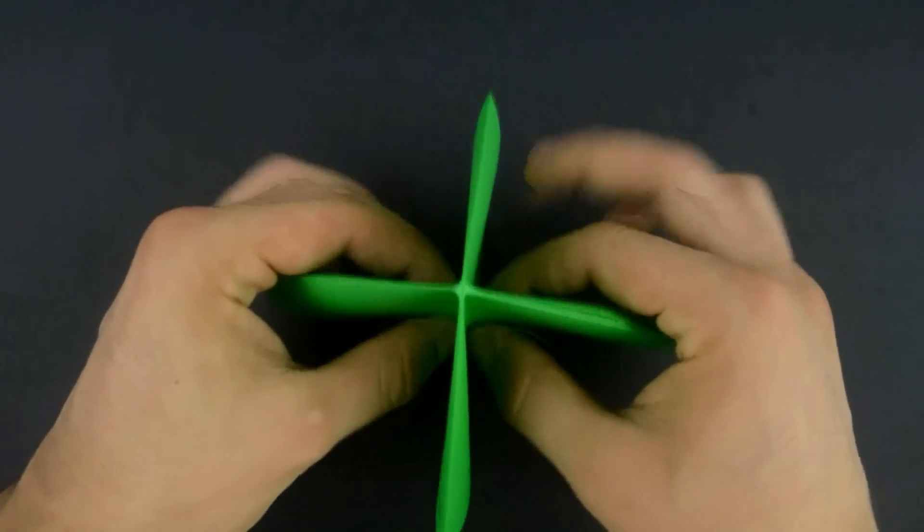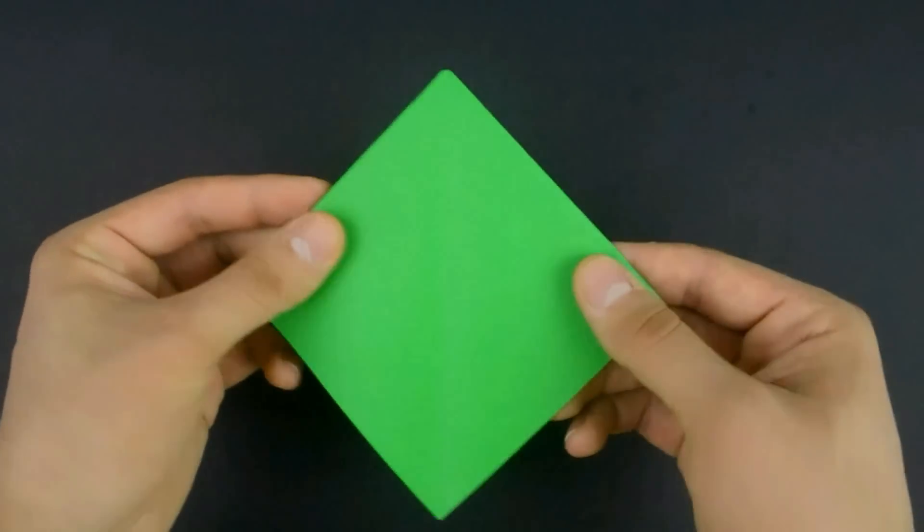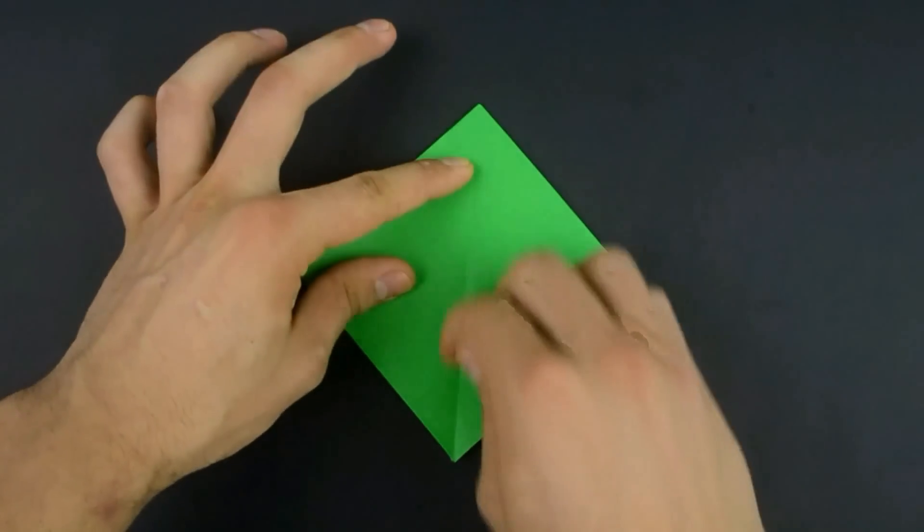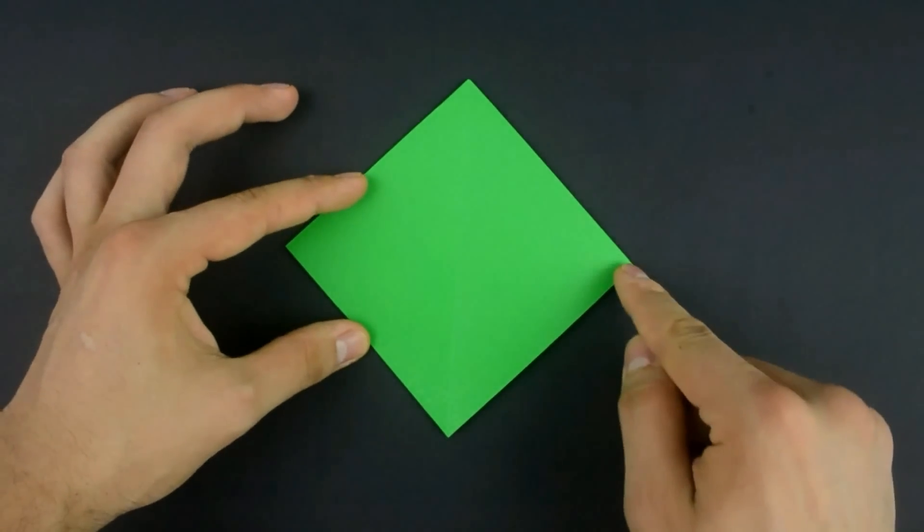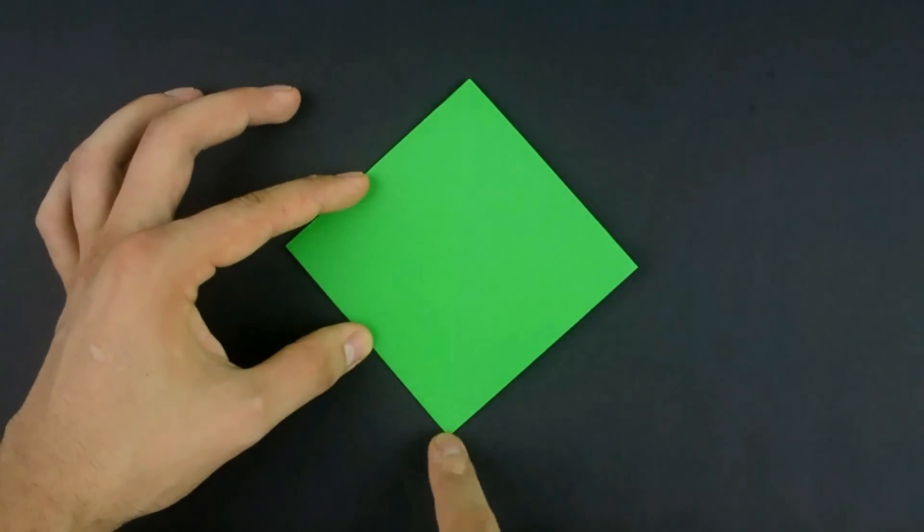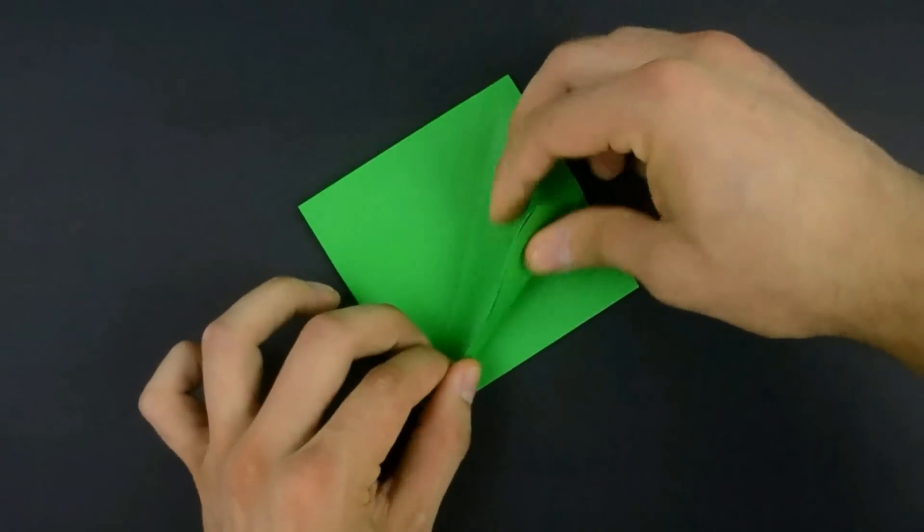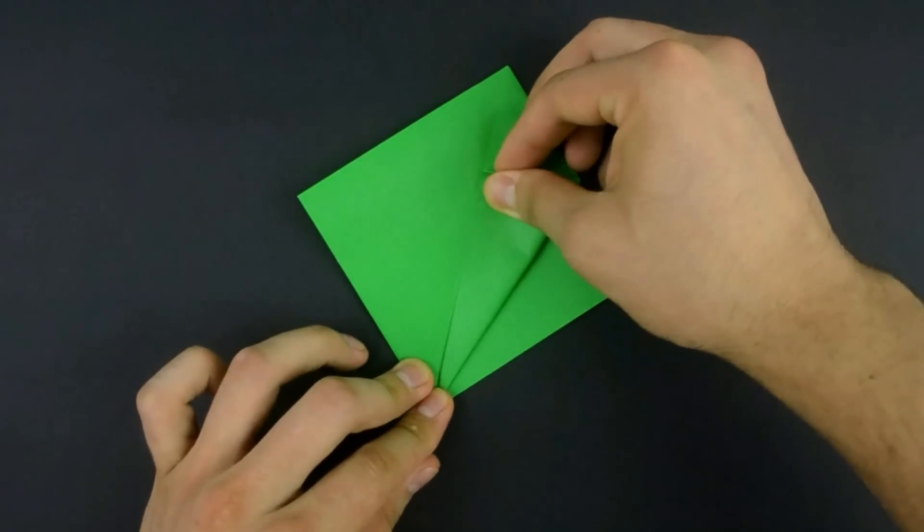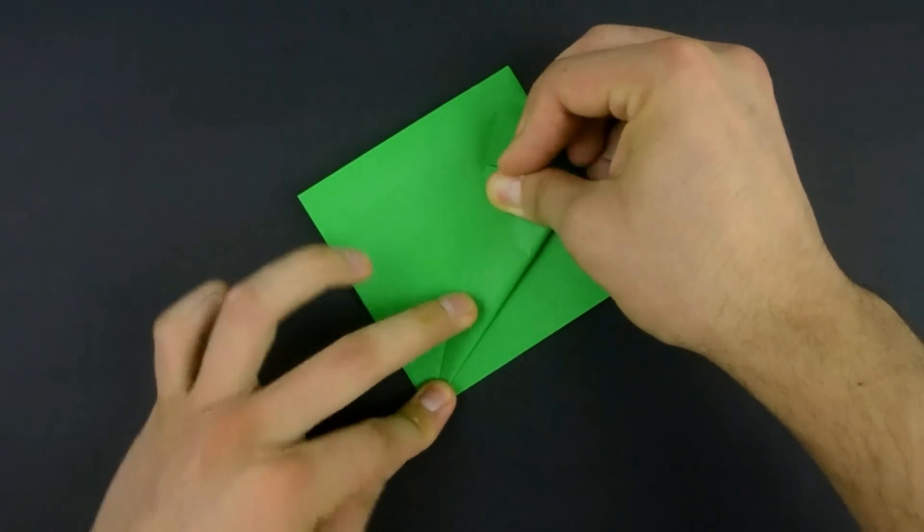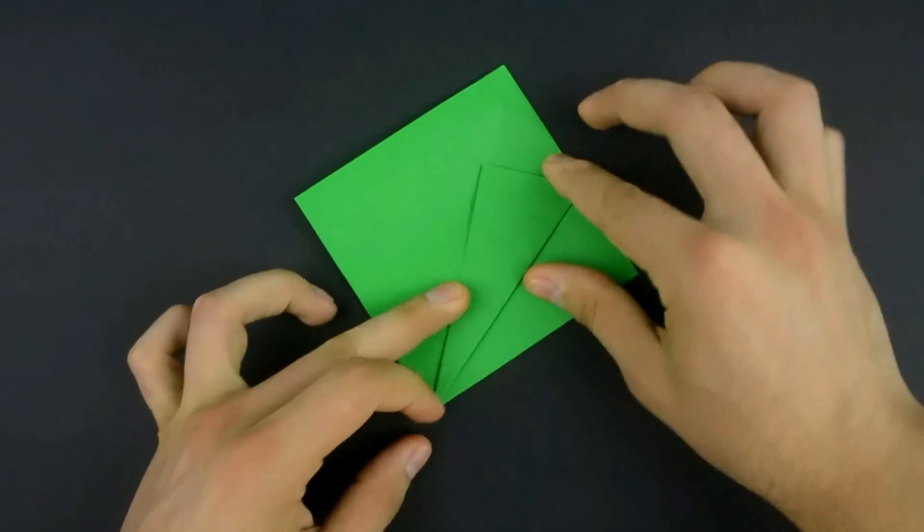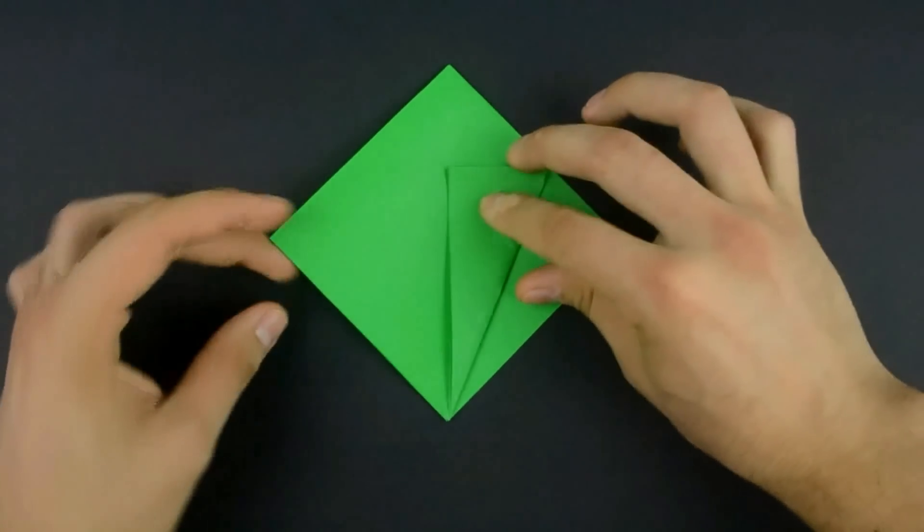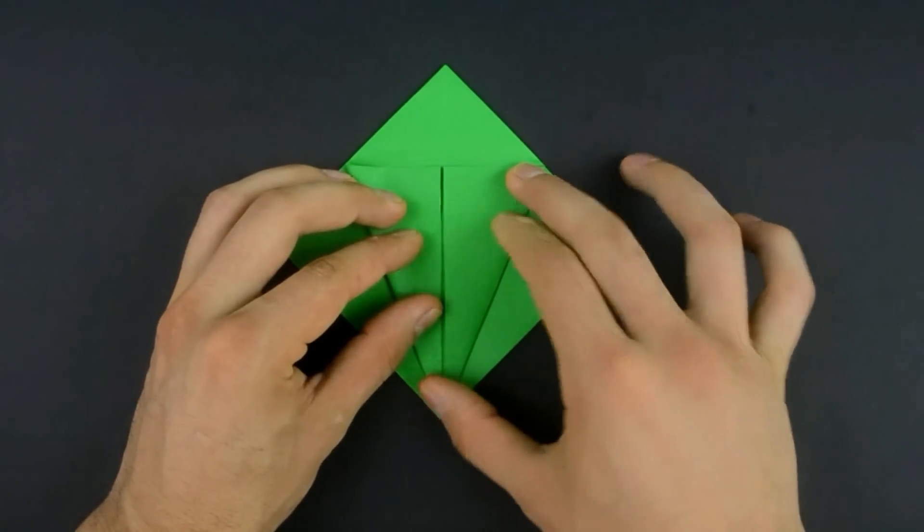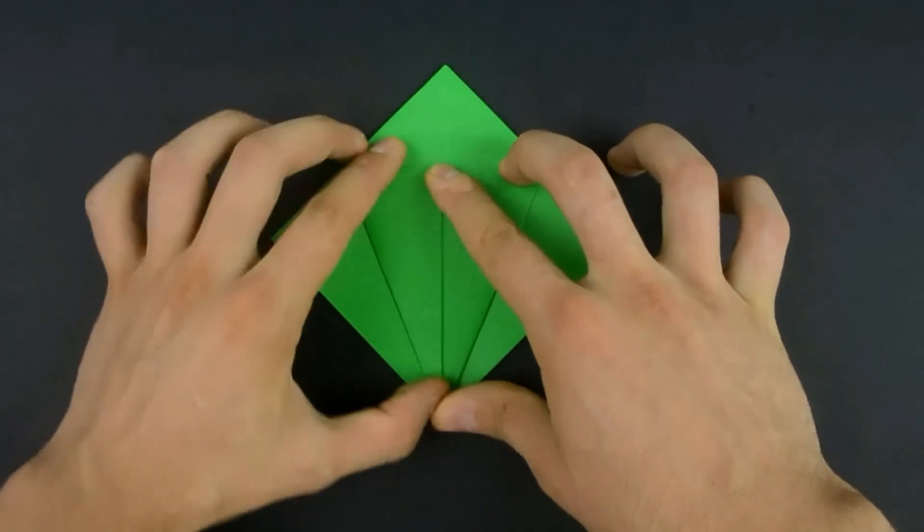Just like that. Reinforce the folds. And in this position, pull this edge to the middle. The other side as well. Then undo both.